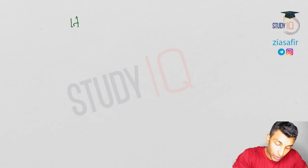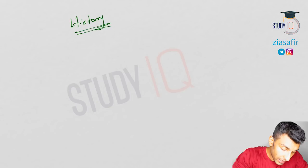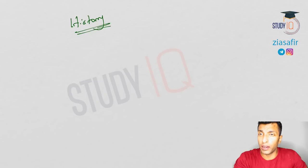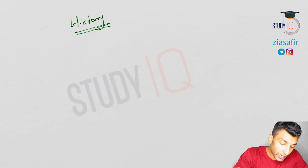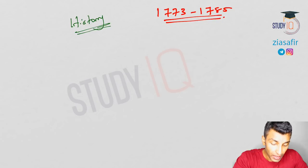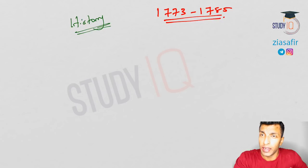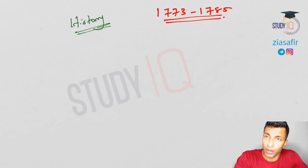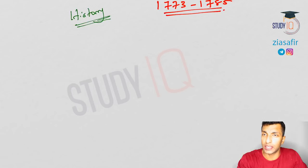Hello students, welcome to Study IQ. In this session we will be discussing history, continuing our discussion from previous sessions. We will cover a time frame from 1773 to 1785, mainly during Warren Hastings. Important events include the 1773 Regulating Act, the Pitt's India Act of 1784, and the governance of Warren Hastings.